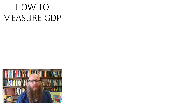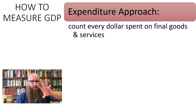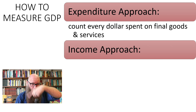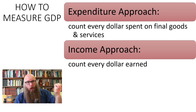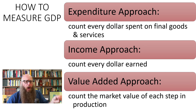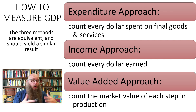So how do you calculate GDP and measure the economy? There are basically three methods: the expenditure approach, which counts every dollar spent on final goods or services; the income approach, the other side of that circular flow, which counts every dollar earned; and then the value-added approach, which counts the market value of each step in the production process.